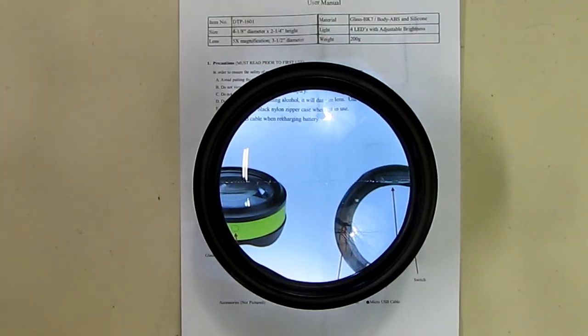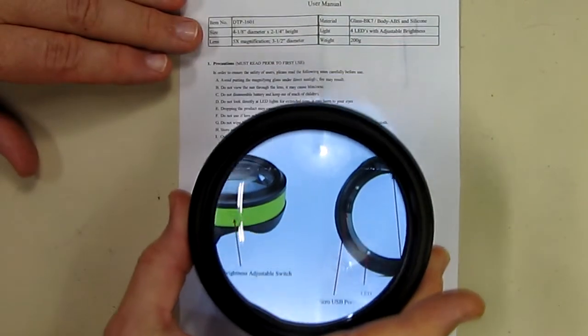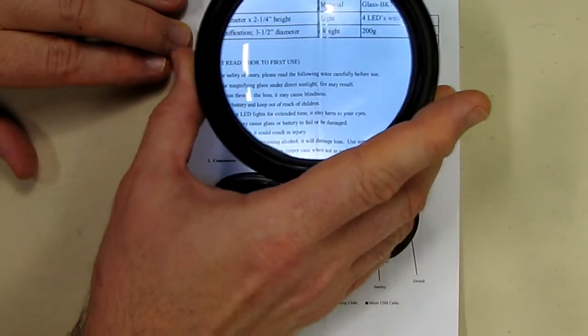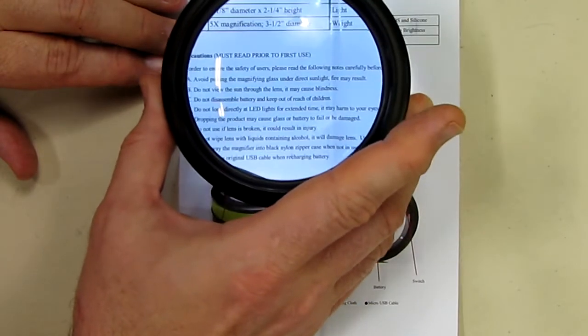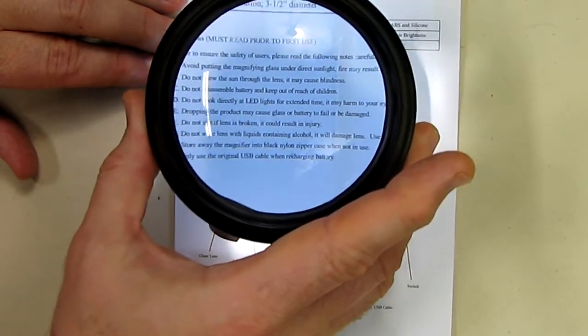I'm going to use the instruction two-sided sheet to demonstrate how this works. Very simple: once you turn it on, you just move the lens across the text or wherever you're looking at, and you could see if I move it a little further back, you can get the focus just perfect.